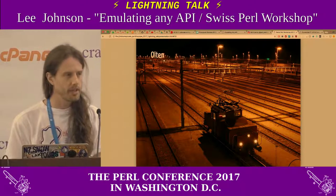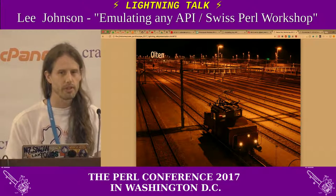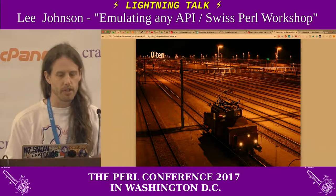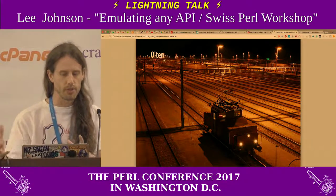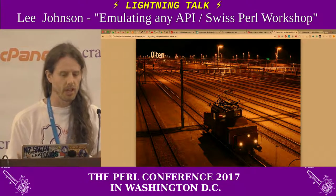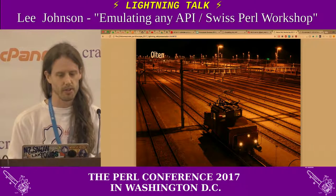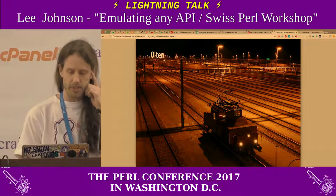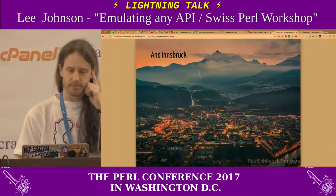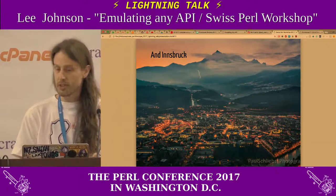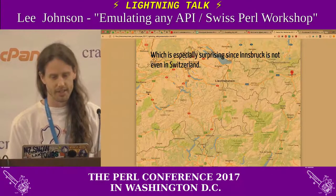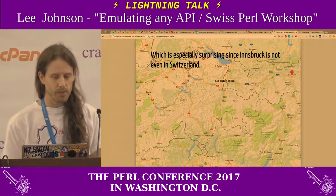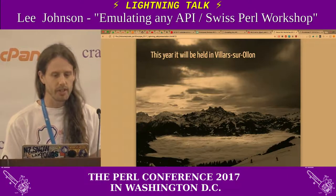The reason why there's a picture of a train yard is that Alton is at the north-south, east-west crossing of the train tracks, so you get lots of people taking photos of trains basically. It was also in Innsbruck, which is especially surprising because Innsbruck is not in Switzerland. And this year it's in Villers-Sorland, which is in the Alpes-Vaudois.